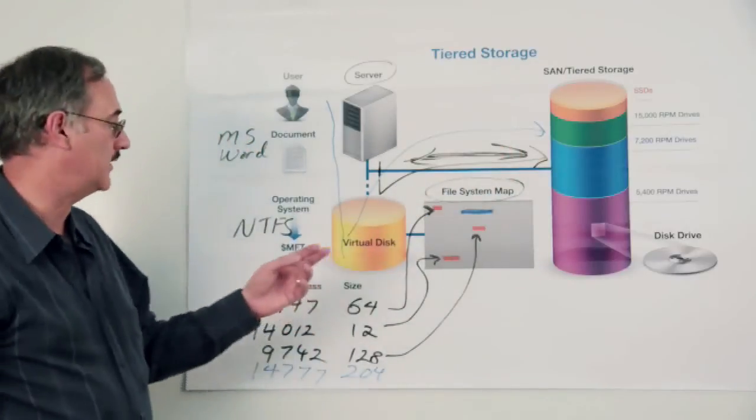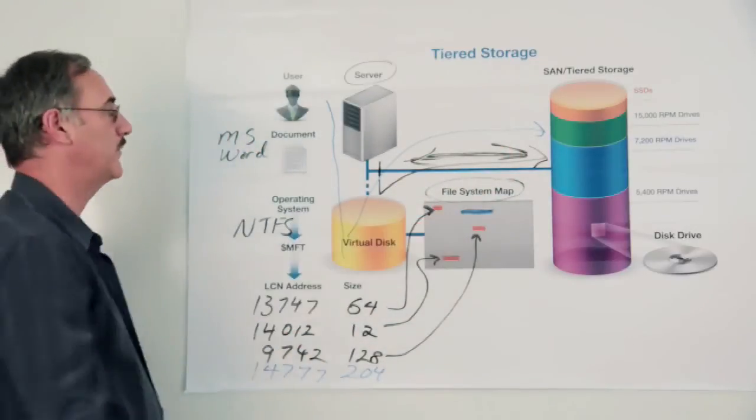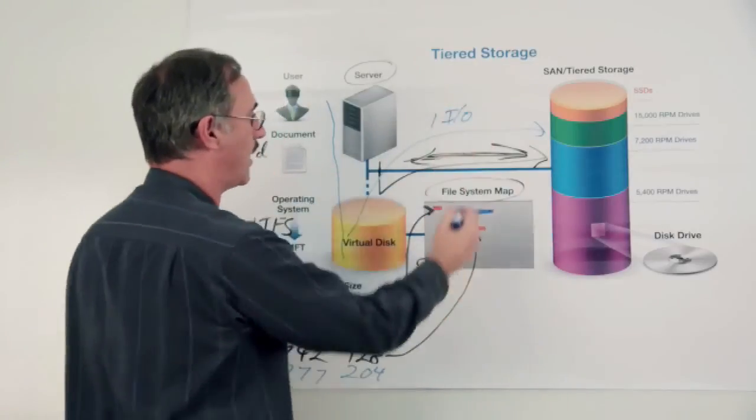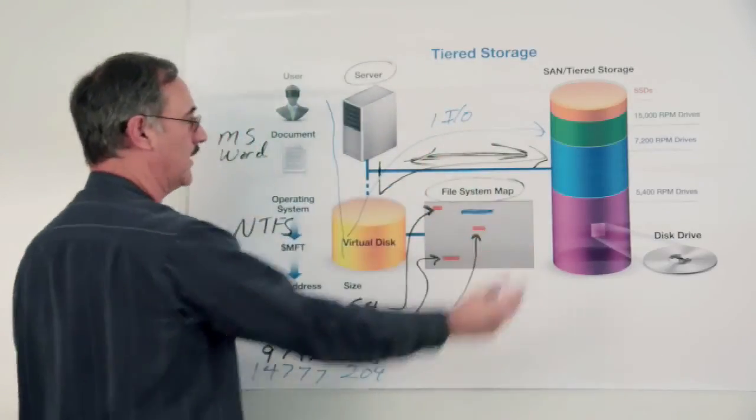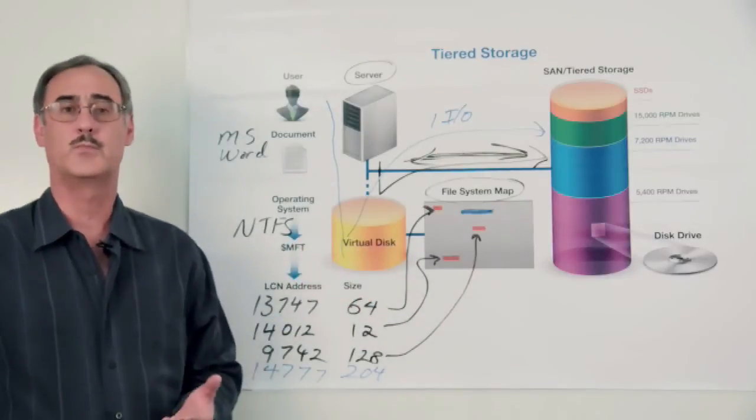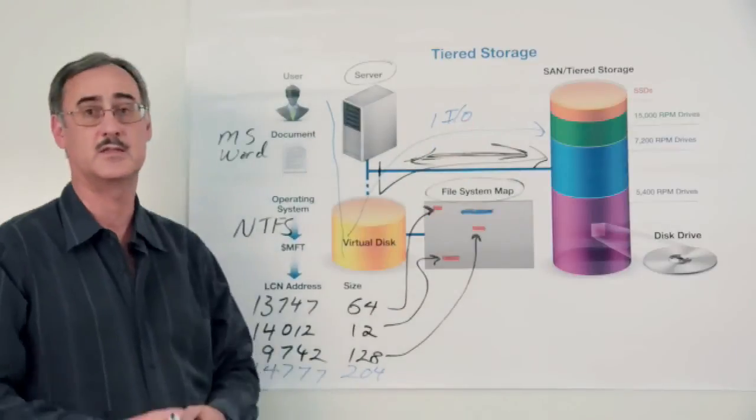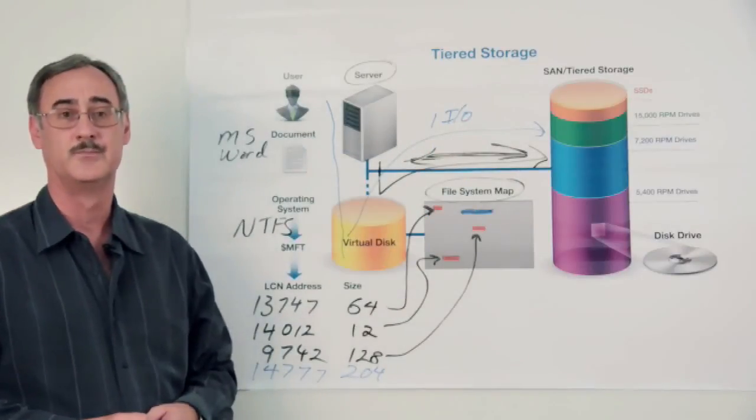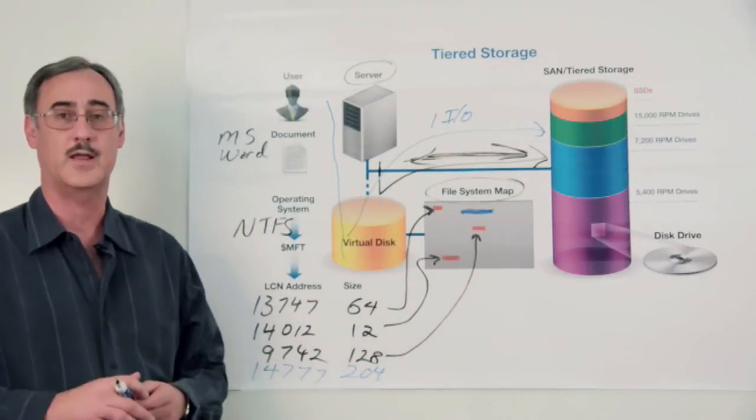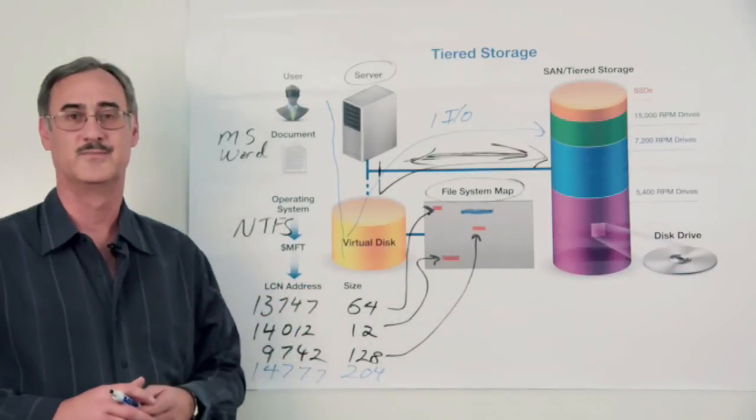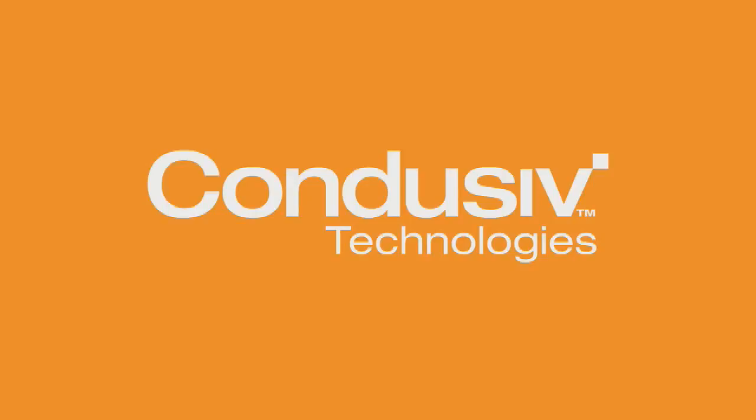So in this particular case, where we can map a file into one piece, there would be one IO request instead of all of these IOs back and forth. So as a result, you wind up getting more throughput, greater level of efficiency, better use of your SAN tiered storage, all with no added overhead. It certainly makes sense to me. How about you? Thanks very much.